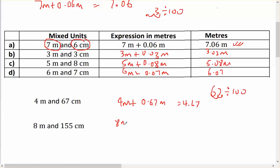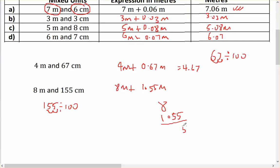And 8 metres plus 155 divided by 100, move the decimal point 2 spots, is 1.55 metres, which is 8 plus 1.55 is 9.55 metres.